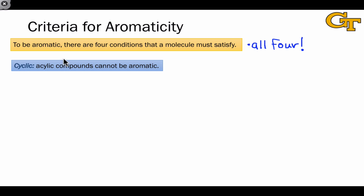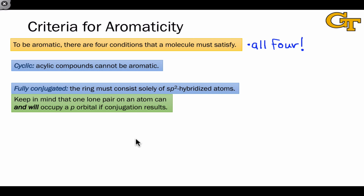The first is that the molecule must be cyclic. Acyclic compounds cannot be aromatic. The second condition is that the molecule must be fully conjugated — that is, the ring must consist solely of sp2 hybridized atoms, so that there's a p orbital on every atom that can participate in pi bonding with the atoms next to it.